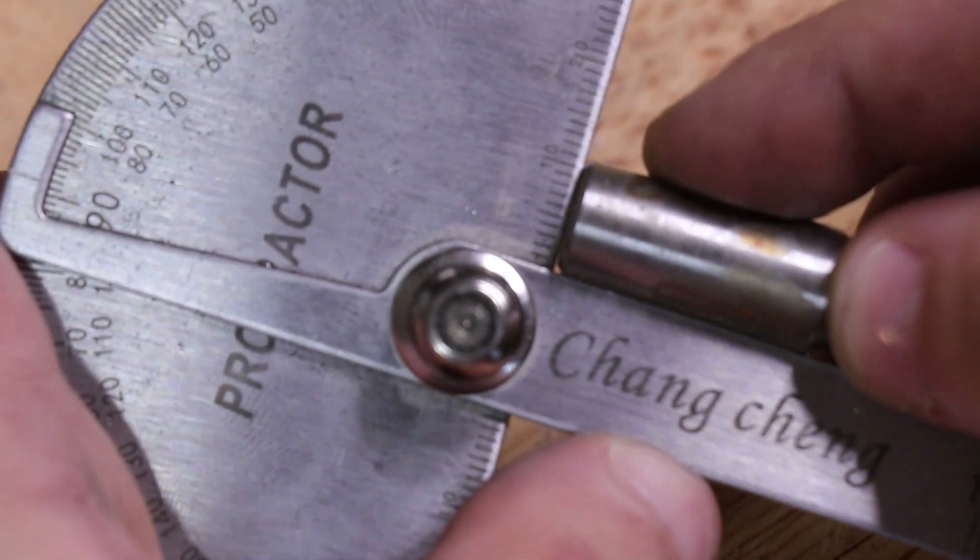Because I'm making the collet chuck for the Sherline I need to cut a Morse 1 taper on the back of the collet chuck.